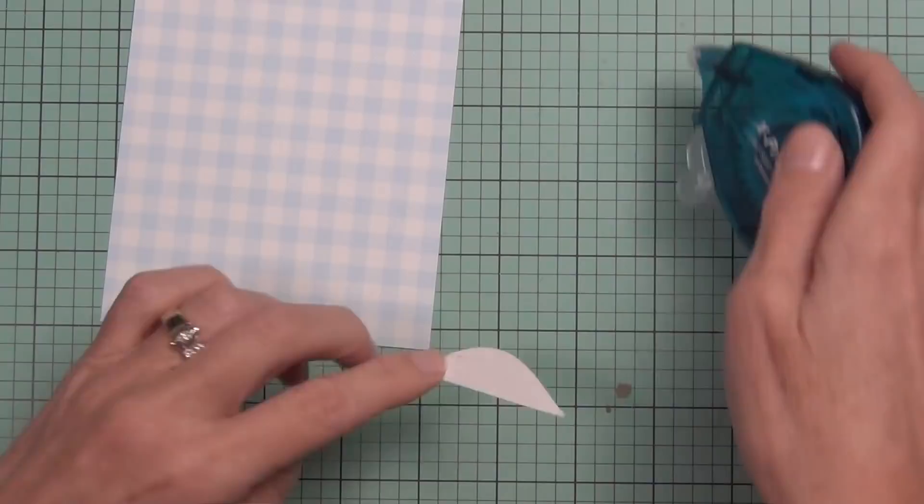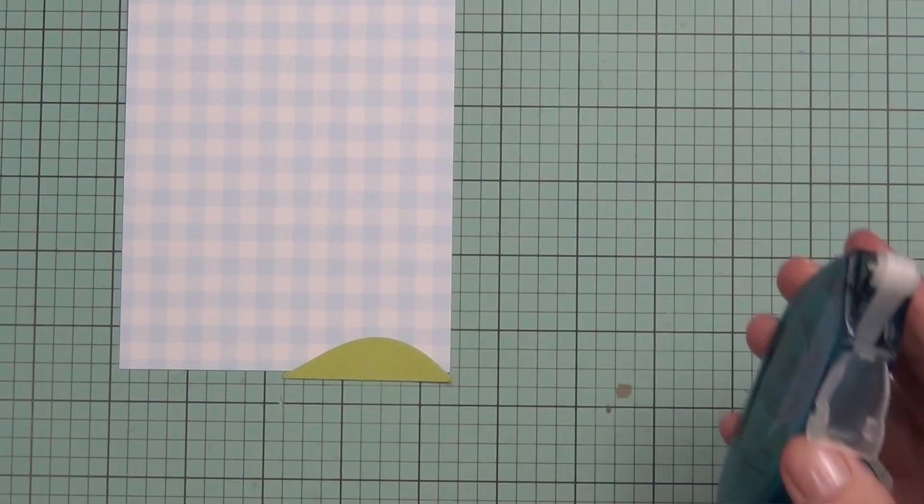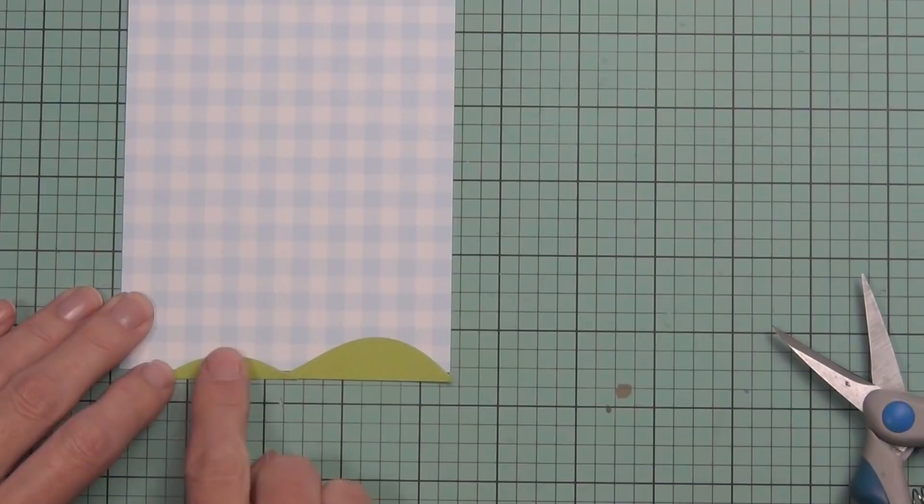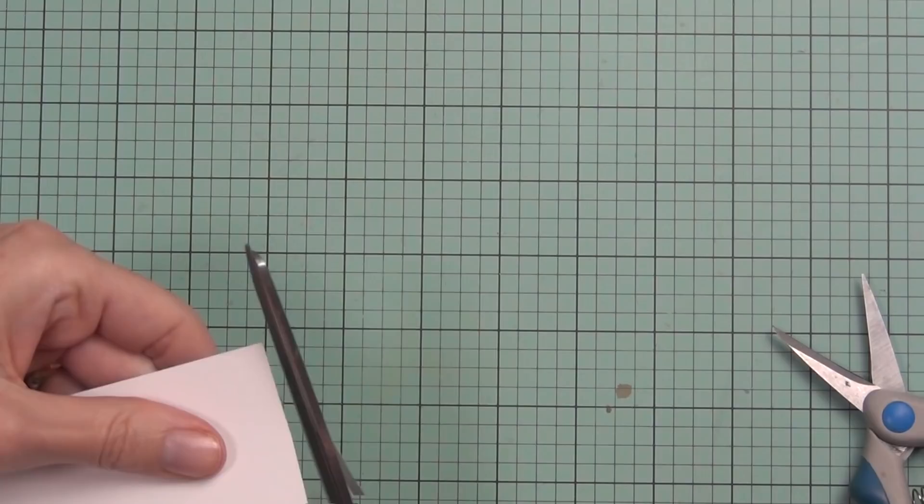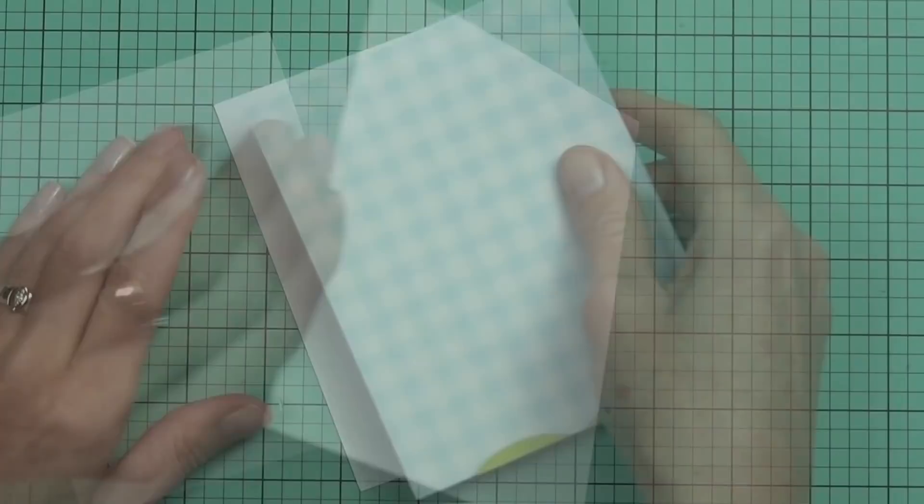I've created some little hills using the Landscapes die from the Essentials by Ellen collection, and I'm popping it on a background of some gingham cardstock from Lawn Fawn. I'm using my tape runner to make sure that's in place. I did actually color another image with some Copic markers thinking I was going to go with a messy Copic marker technique. You'll be able to see that card at the blog because I didn't end up using that on this design.